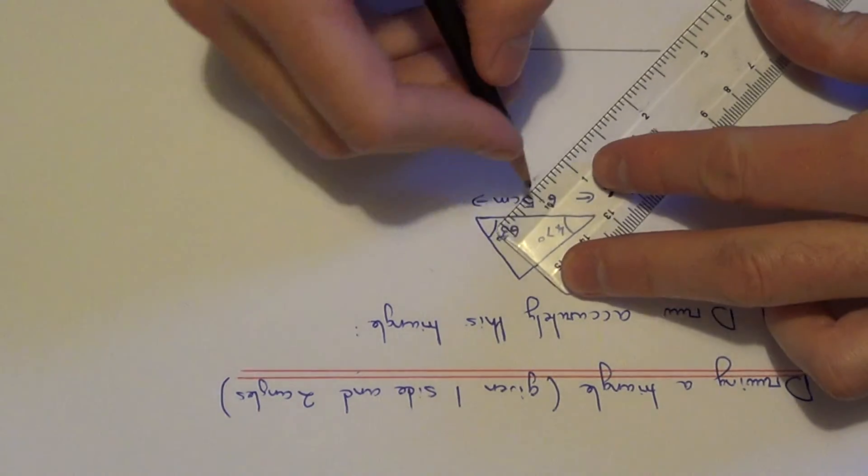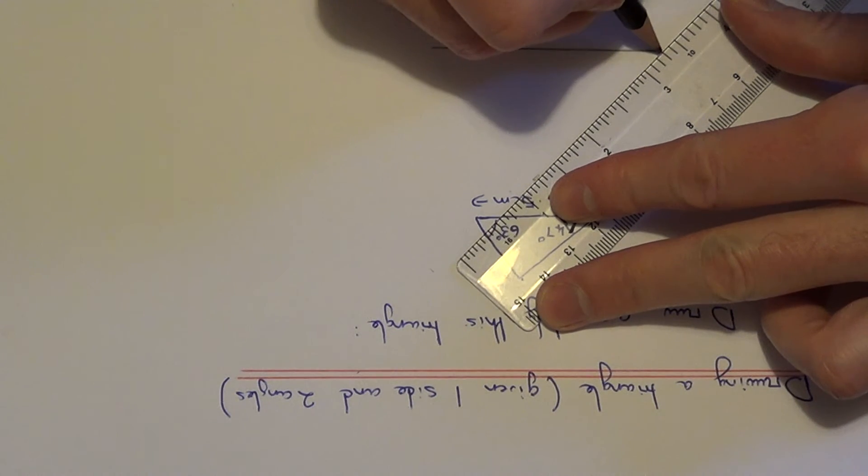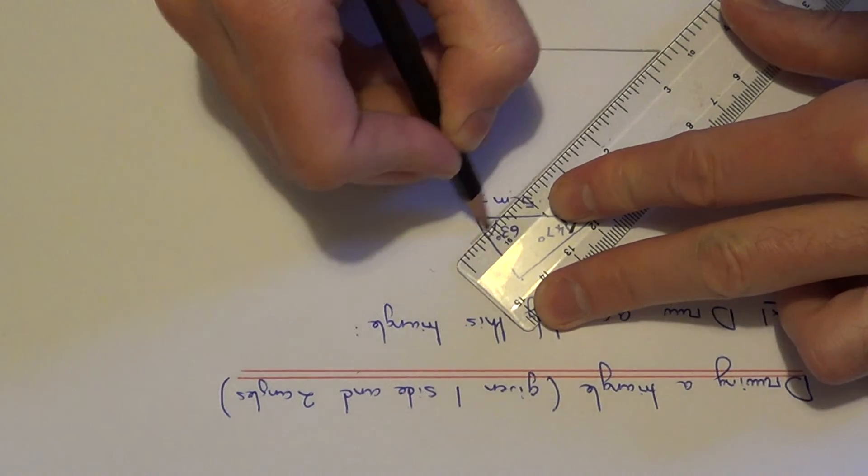Now draw a line back to the left-hand side of the line. We don't know how long this line has to be, so make it as long as you can.